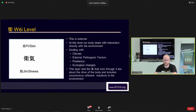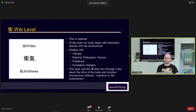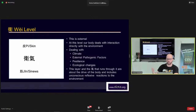The Wei level is the external — the most exterior part of the body, dealing directly with the environment outside. The skin, the hair and the sinews all interact directly with the environment. The sinews are about manipulation of the outside environment — they help you stand up, sit down. The Pi (skin) and Jin (sinews) deal directly with climatic factors, external pathogenic factors, pestilence, and ecological factors. The Wei Qi that runs at this level drives unconscious reflexive actions — like sweating when it gets hot, or hair standing on end in the cold.